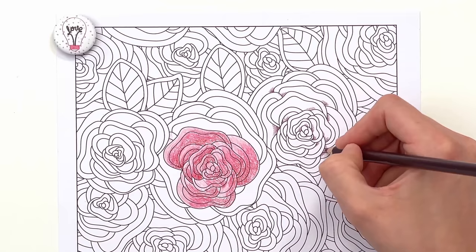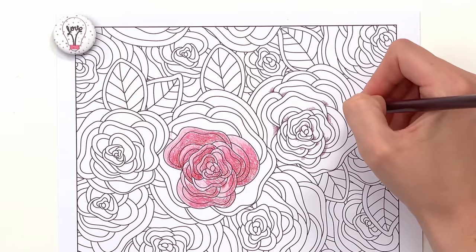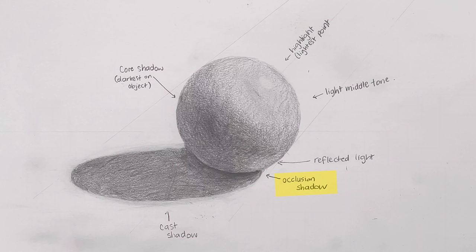And finally, occlusion shadows. Occlusion shadows happen when two objects are so close together that it's impossible for the light to reach in between them. These areas will almost always have shadows no matter where the light source is.